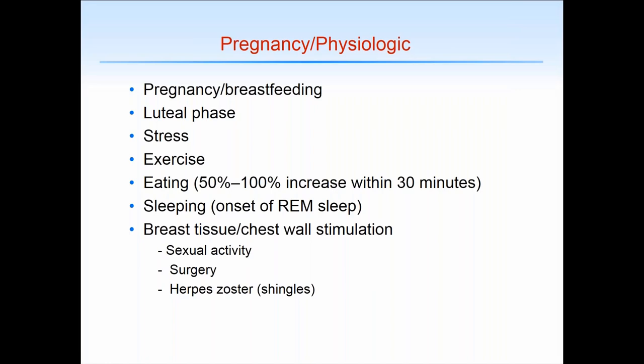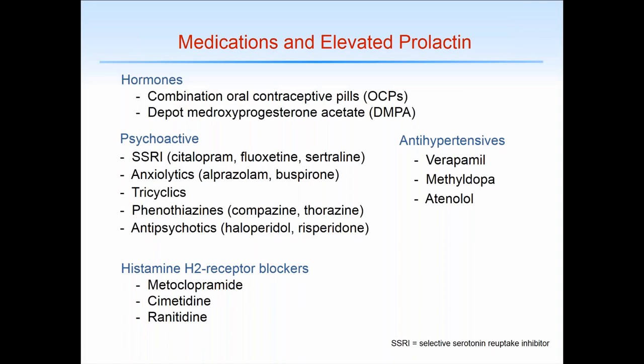Birth control pills, particularly the estrogen component, can increase prolactin levels, though generally not clinically significant. Most clinicians will now give OCPs to patients even with small adenomas if this is the best form of contraception for them. Other medications can also increase prolactin levels, and while a new medication can be tried, the patient's requirement for the medication may outweigh concerns about a minimal increase in prolactin level.